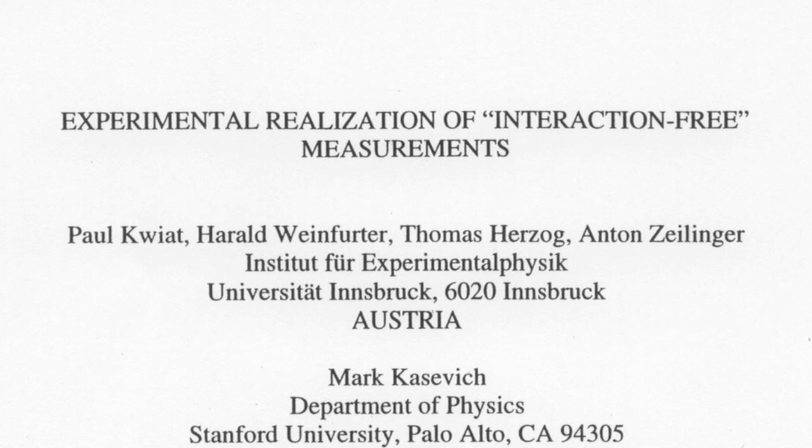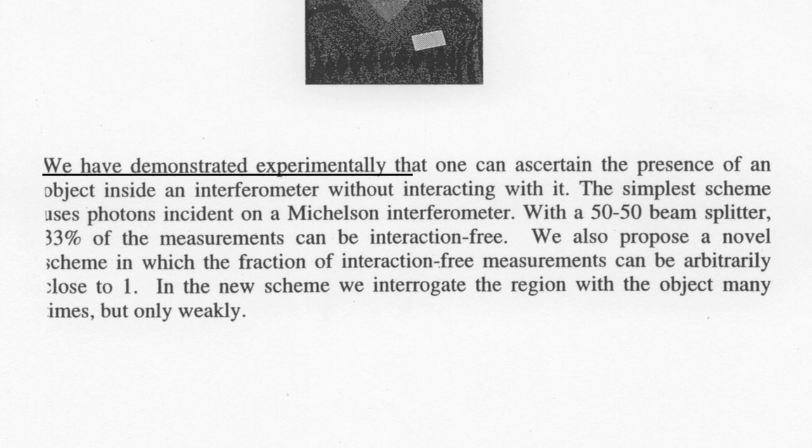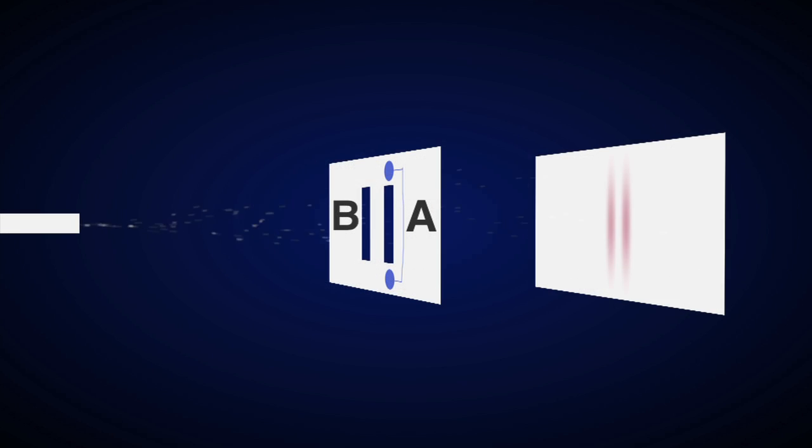As they open their paper with, we have demonstrated experimentally that one can ascertain the presence of an object inside an interferometer without interacting with it. But what is causing collapse in slit B?